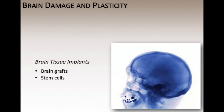Brain grafts are implants of healthy tissue into damaged brains. The most successful cases of brain grafts occur when the tissue from the implant comes from the fetal stage. The use of stem cells has been hotly debated in recent years, as stem cells are unique because they have the ability to develop into most types of different cells.